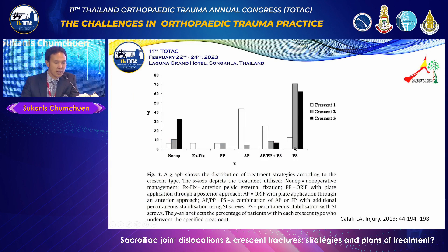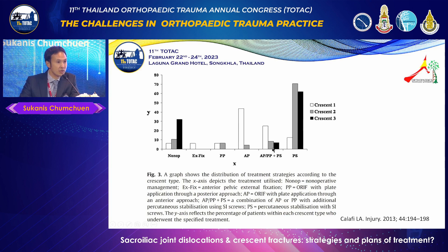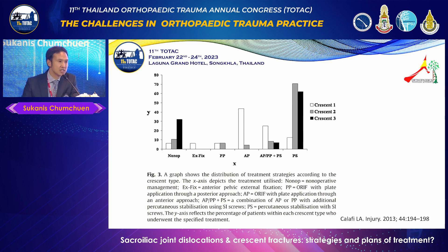Looking at the paper, in type 2 and type 3 they use percutaneous ilioinguinal screw and the fracture is more amenable. But it cannot apply to every case. Both anterior and posterior fixation — plating and screws — may be required. As I mentioned, it's a broad spectrum of injury, not just a posterior link.